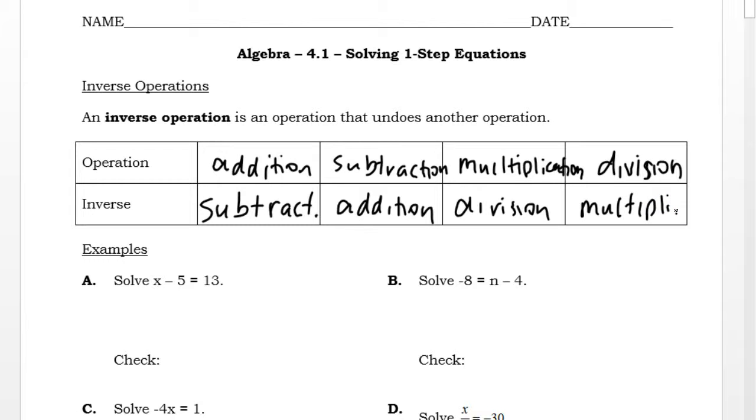So when you are solving an equation, you use its inverse operation to figure out what the quantity would be. So in example A, I have an equation, x minus 5 equals 13. So some number, if I take 5 away from it, I'm left with 13. And to solve that, I would just think about what the opposite is.